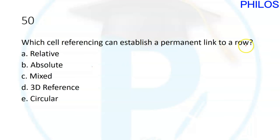Question fifty: which cell referencing can establish a permanent link to a row? An absolute reference remains constant regardless of where the formula is copied or moved. You use the dollar sign — for example $A$2 — to create an absolute reference. It establishes a permanent link. The correct answer is B: absolute reference. That ends part one.